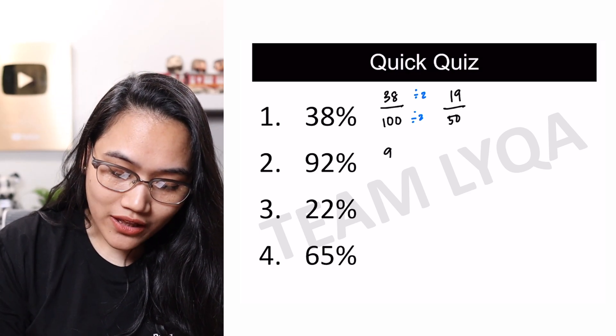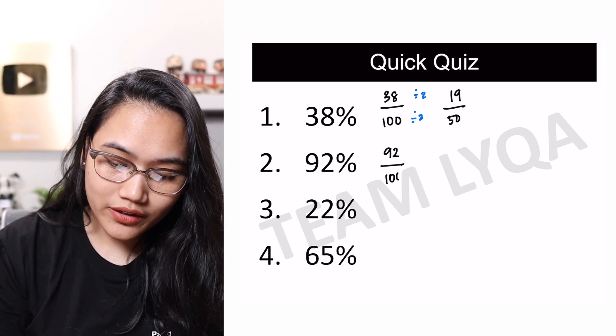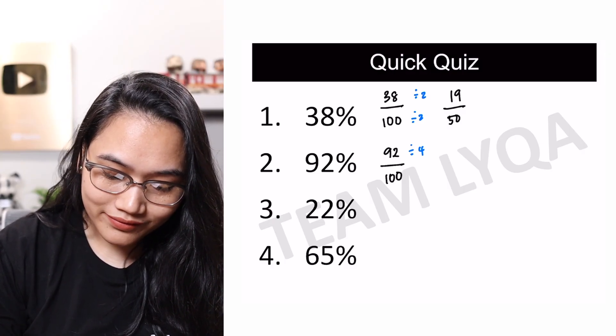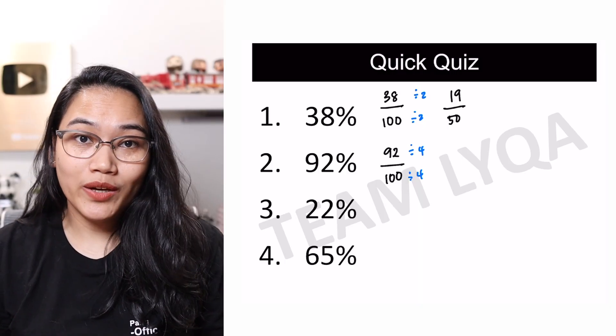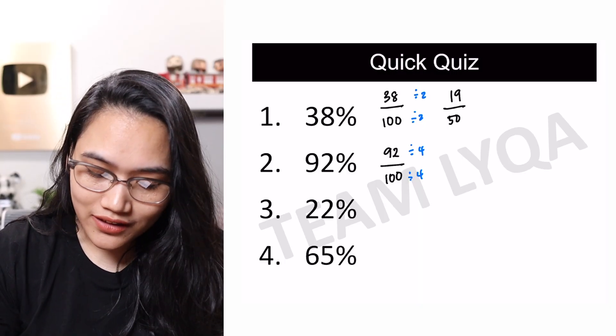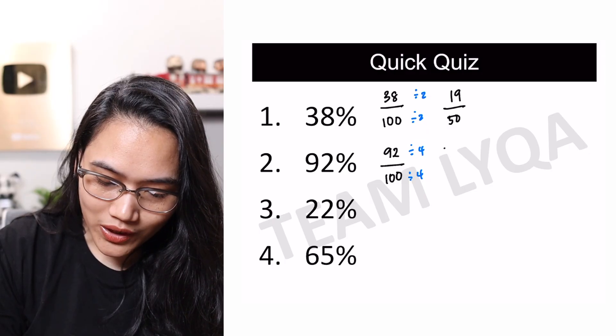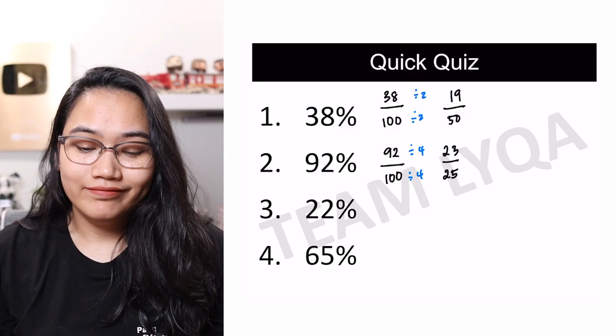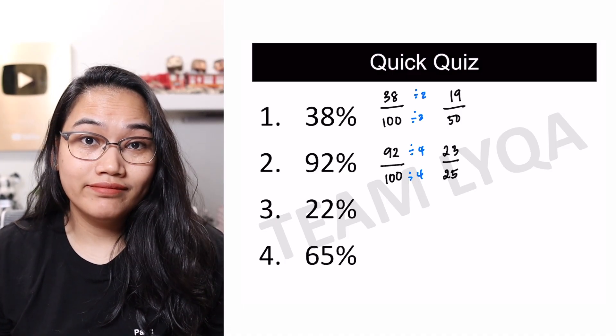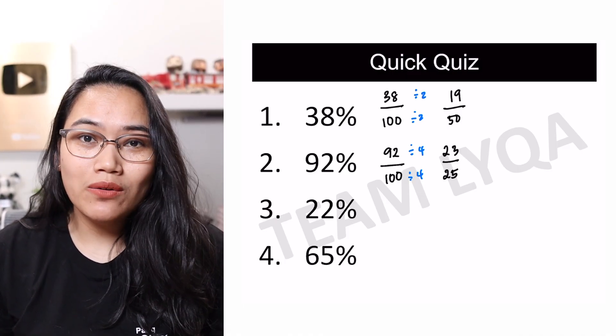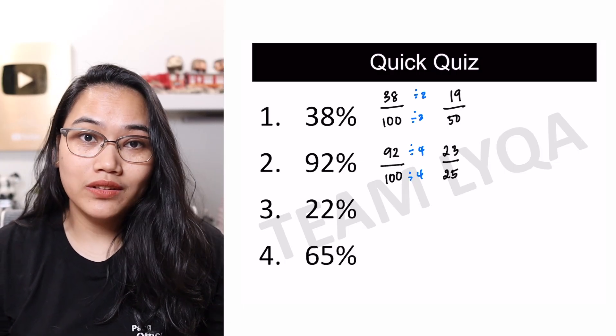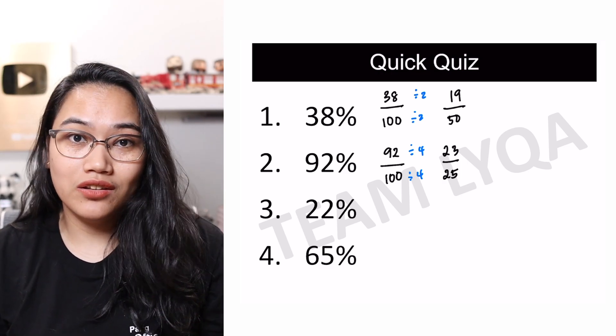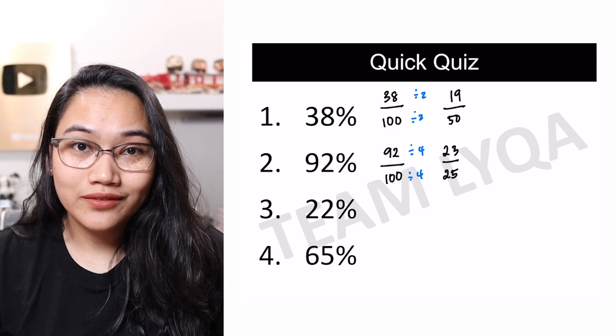Next, we have 92% or 92 over 100. Let's divide this by 4. So again, could be 2, could be 4. Let's try just 4. So here you have 23 over 25. Now, again, can I do anything more? No more. So we'll leave it at that. Now, if what you did was divide them by 2, and then you get 46 over 50, you can divide that by 2 again to get 23 over 25. We still have the same final answer.